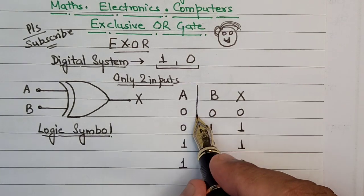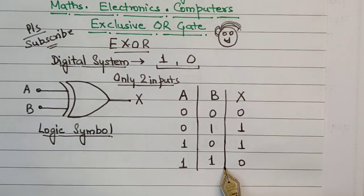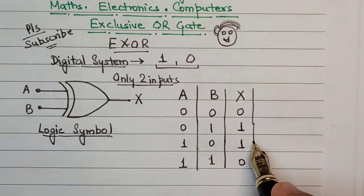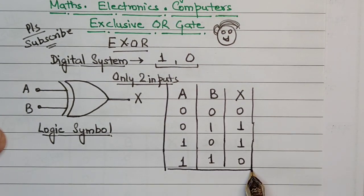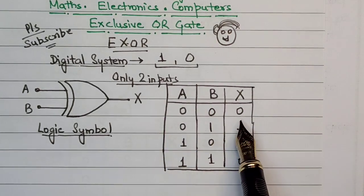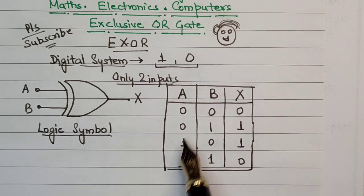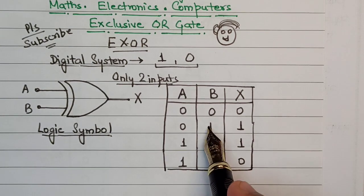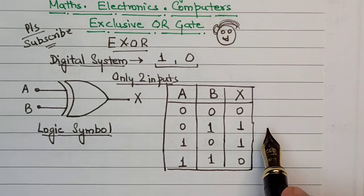This in a nutshell is the truth table for an Exclusive OR gate. Since this does not have more than two inputs, this is the full and final table for the XOR gate. Always remember: you will have an output of 0 only when the two inputs are the same, and if the two inputs are different, you have the output as 1.